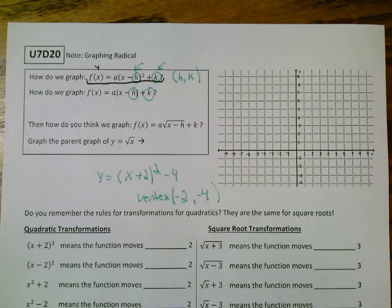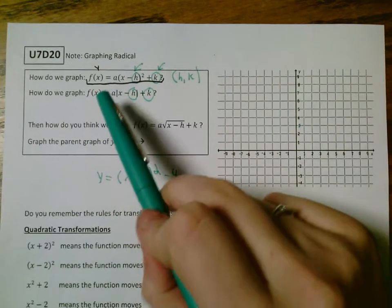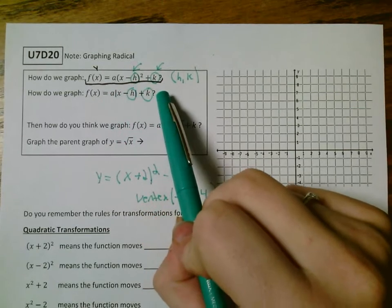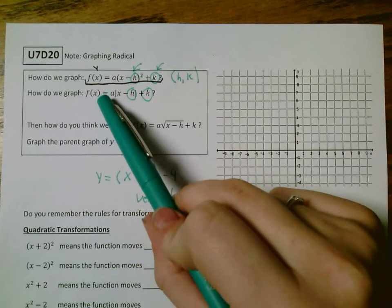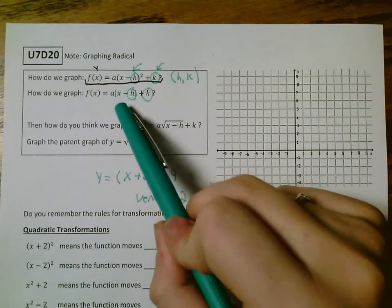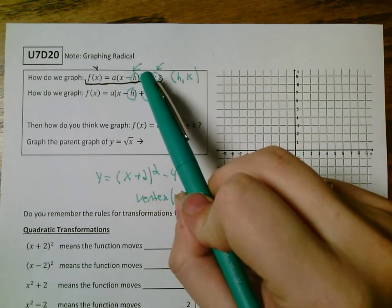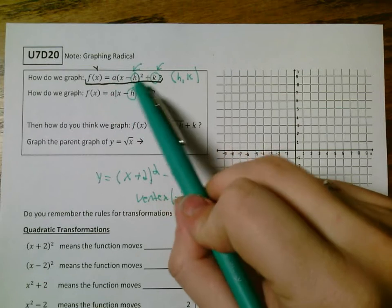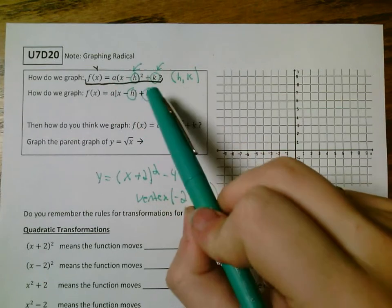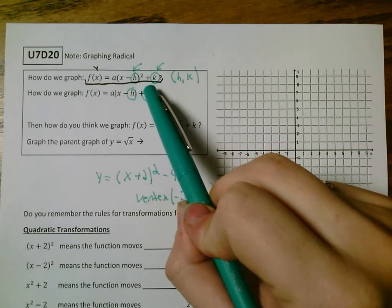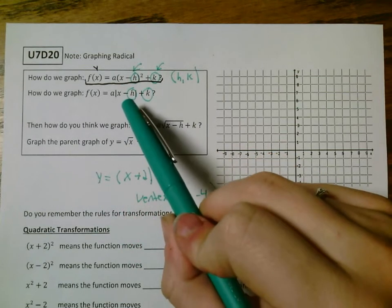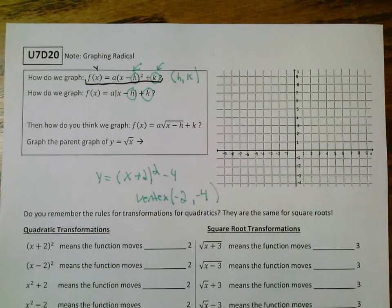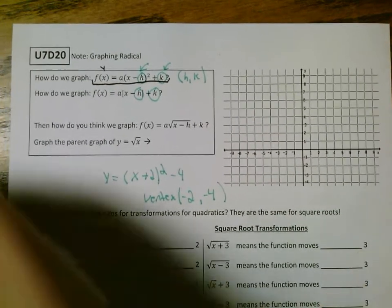The first thing we have to do when considering graphing a radical is look back at what we've already done. You can see here that I have f(x) = a(x − h)² + k, and then the same format but with absolute values: f(x) = a|x − h| + k. Think about what shape a quadratic made, and then think about what shape an absolute value made. If you're not sure, look around the room at the posters.